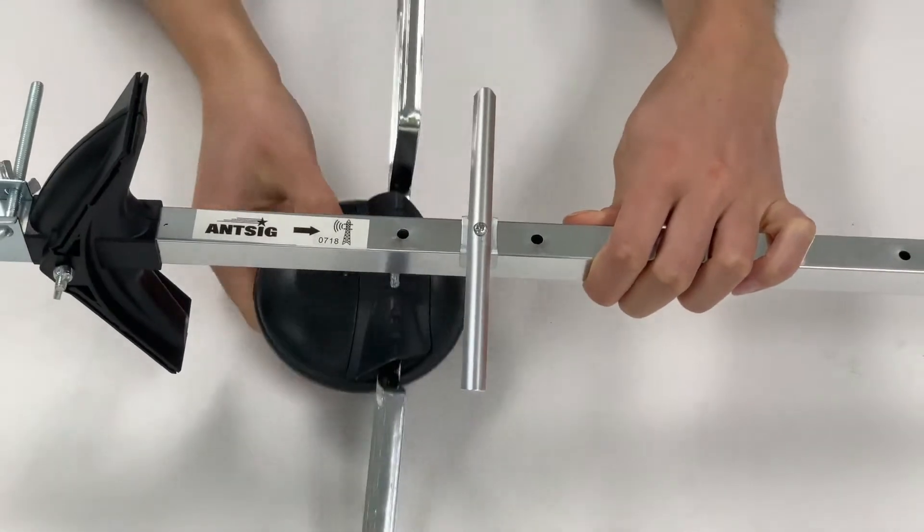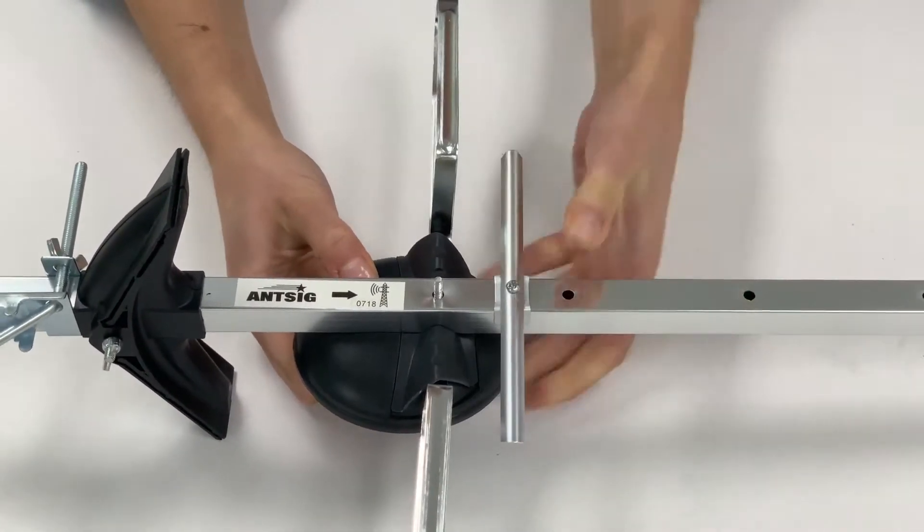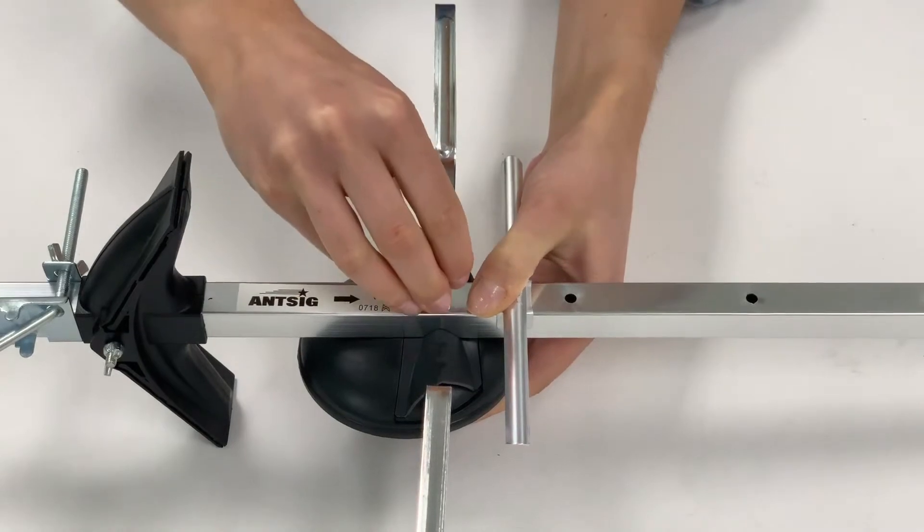Attach the loop element to the boom here. While ensuring correct orientation, tighten the wing nut until firm.